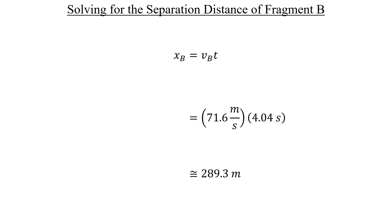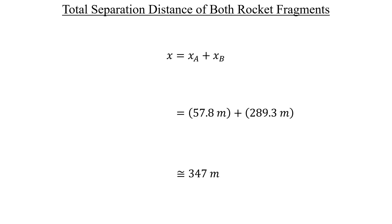To get the full separation distance, x, we're going to take those two distances and add them together. And answering to three digits, you can see at the bottom that we get approximately 347 meters for the final answer of B.